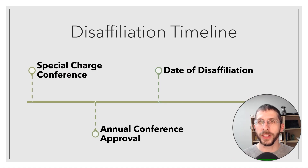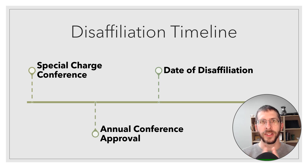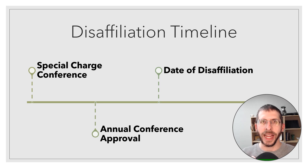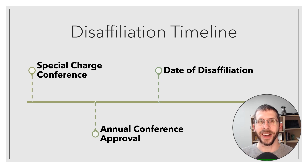We're going to follow a very simple timeline. We'll start at the special charge conference where your church votes to disaffiliate, then look at what has to happen before the annual conference votes to approve your disaffiliation. There's also a period after that before the church actually leaves the United Methodist denomination. The disaffiliation date is the last date your church is United Methodist — kind of like the closing date on a house — and the first date your church will be Global Methodist.